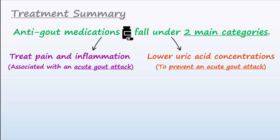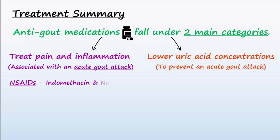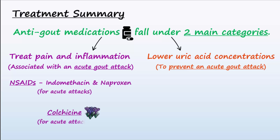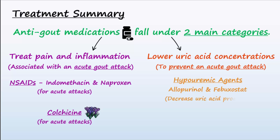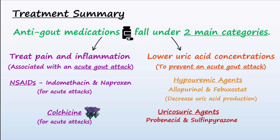Here is a summary of the anti-gout medications. NSAIDs, such as indomethacin and naproxen, and colchicine are used to treat acute attacks. For prevention of gout attacks, hypouricemic agents like allopurinol and febuxostat decrease uric acid production. And uricosuric agents like probenecid and sulfinpyrazone increase uric acid excretion.